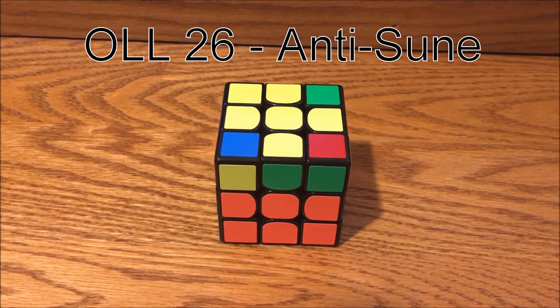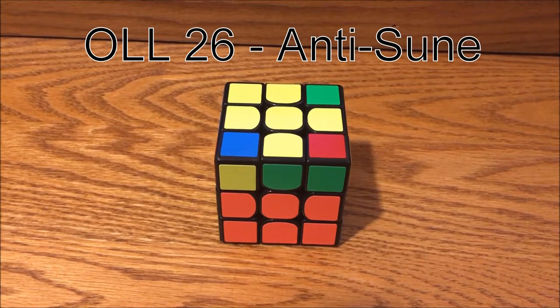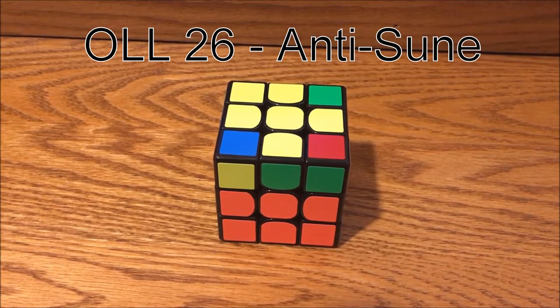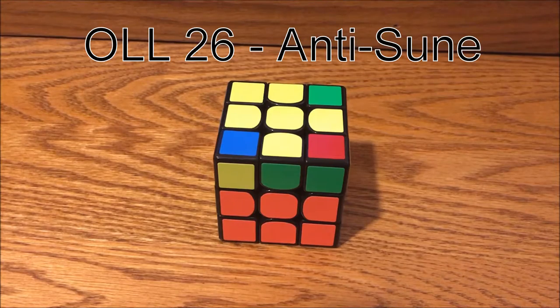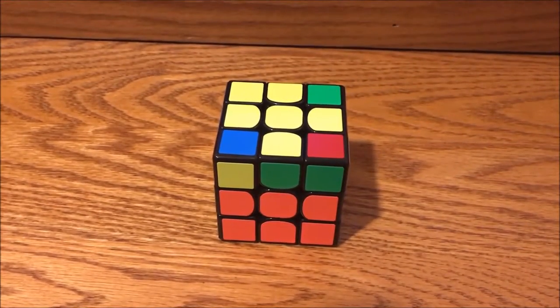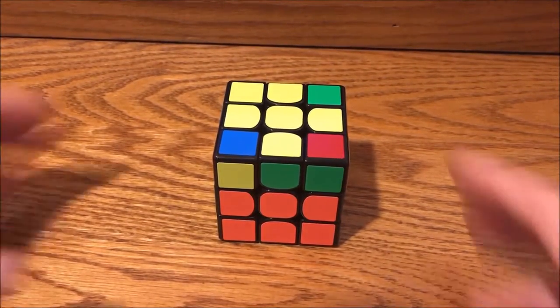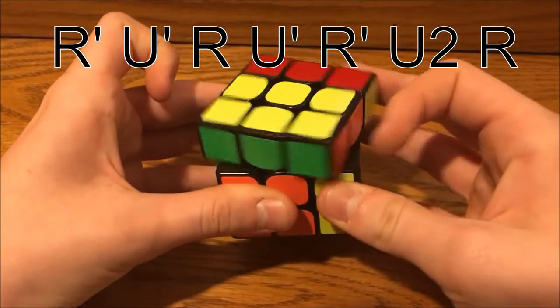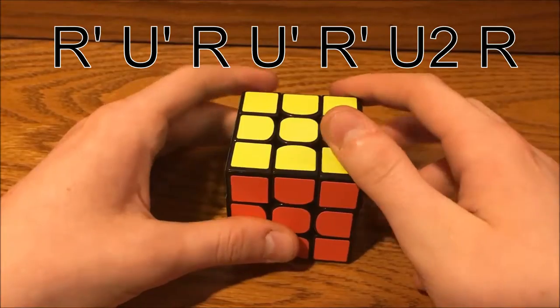So the other sune case, anti-sune, I recognize by seeing that the corner facing towards you is on the left instead of the right. This is basically the mirror of the sune case. To solve this case, you use this algorithm. And here it is fast.